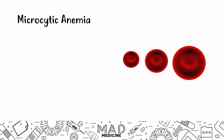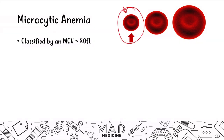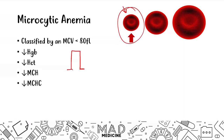Microcytic anemia is classified by an MCV that is less than 80 femtoliters, which means that you're going to have small red blood cells. The hemoglobin, the hematocrit, the MCH (mean corpuscular hemoglobin), and mean corpuscular hemoglobin concentration are all going to be decreased. That should clue you in to microcytic anemia.